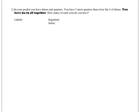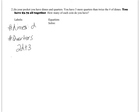Let's try one more. This looks like the same problem: in your pocket you have dimes and quarters, and you have 3 more quarters than twice the number of dimes. But now instead of 18 coins, I say you have $3.75 altogether. My labels for dimes and quarters are the same — number of dimes is d and number of quarters is 2d plus 3. But my total is not in the number of coins; it's in money, $3.75. So it does not make sense to do d plus 2d plus 3 equals 375, because d does not stand for how much money I have in dimes — it stands for how many dimes I have.